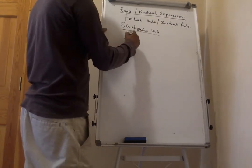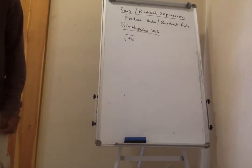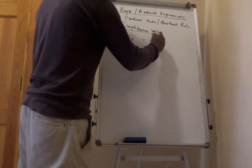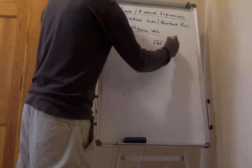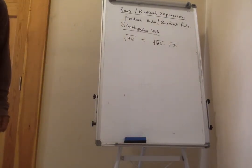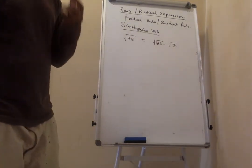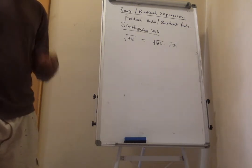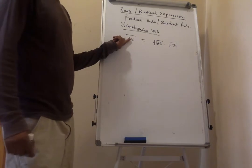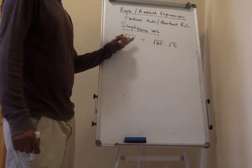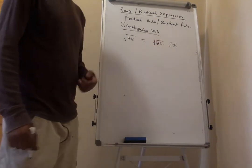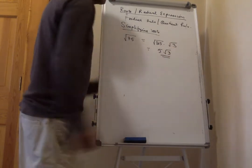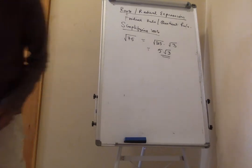Let's try simplifying roots. Suppose you have the square root of 75. The product rule lets me rewrite this as the square root of 25 times the square root of 3, since 25 times 3 is 75. Simplifying roots means extracting a perfect root — the square root of 25 is 5, so the answer is 5 times the square root of 3.